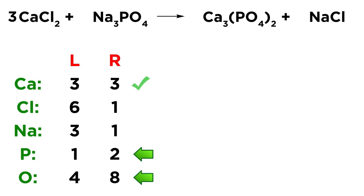On the left we have one PO4, and on the right we have two PO4, so we can treat the phosphate ion as an individual unit. We put a two next to Na3PO4, giving us two phosphate ions on the left — so now we have two phosphorus atoms and eight oxygen atoms on the left, and both phosphorus and oxygen are balanced. However, we've also altered sodium: we have Na3 multiplied by two, so we need to update the sodium count on the left side to six.